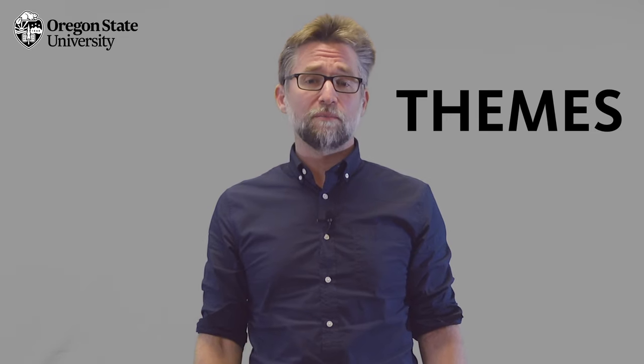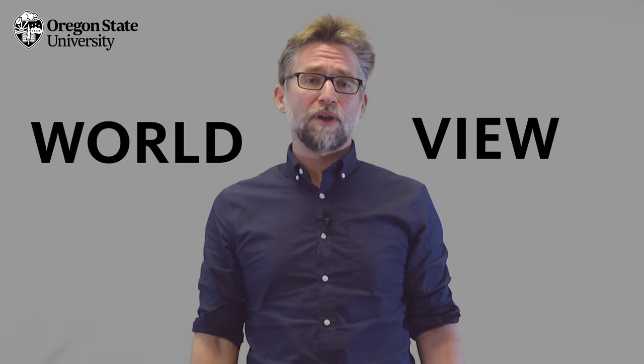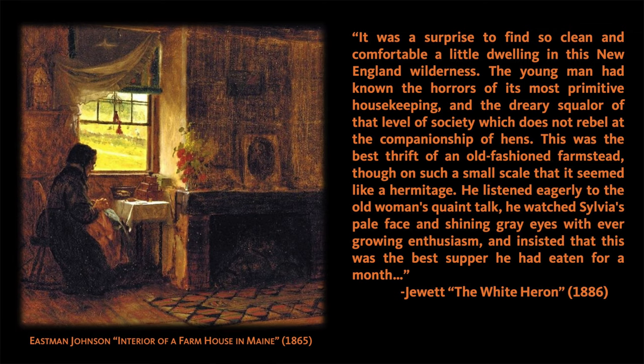Thus what seems like a simple throwaway description of an old-growth tree in fact plays a central role in our understanding of Sylvia's decision, linking her individual story with a larger history of that region. Setting not only helps clarify a story's themes — it can also help us understand a character's worldview through how they think about their surroundings. As Sylvia's thoughts suggest, she views her rural setting as a place of wondrous secrets, grandeur, and dignity. This perspective stands in stark contrast to the hunter's thoughts, which Jewett reveals through a technique called free indirect discourse. When the hunter sits down to dinner at Sylvia's grandmother's house, he thinks: "It was a surprise to find so clean and comfortable a little dwelling in this New England wilderness. The young man had known the horrors of its most primitive housekeeping and the dreary squalor of that level of society which does not rebel at the companionship of hens. This was the best thrift of an old-fashioned farmstead, though on such a small scale that it seemed like a hermitage."